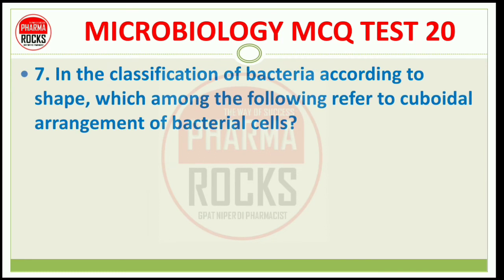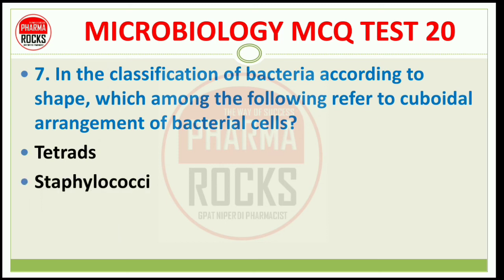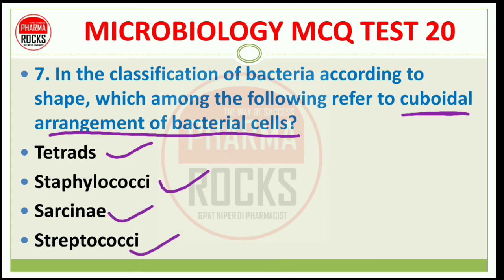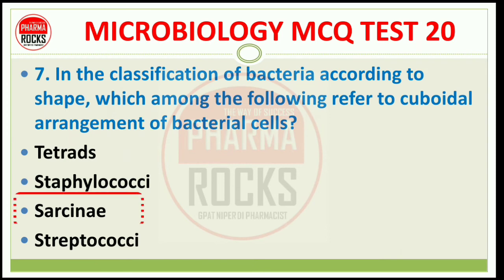Question number 7: In the classification of bacteria according to shape, which among the following refers to cuboidal arrangement of bacterial cells? Options: Tetrads, Staphylococci, Sarcinae, or Streptococci. The question is: cuboidal arrangement कौन से bacteria में होता है? The right answer is option C, Sarcinae.